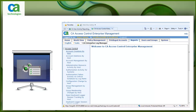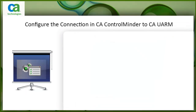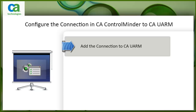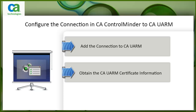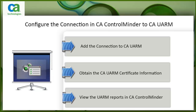CA Control Minder Enterprise Management communicates with CA UARM to display reports with CA Control Minder related information. To display these reports you need to configure the connection to CA UARM. To configure, you perform the following tasks: add the connection to CA UARM, obtain the CA UARM certificate information, and view the UARM reports in CA Control Minder.